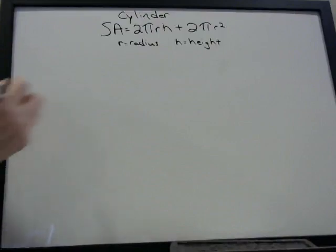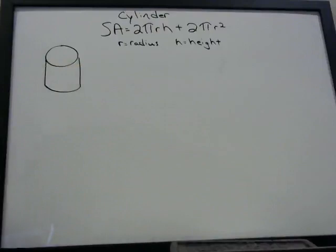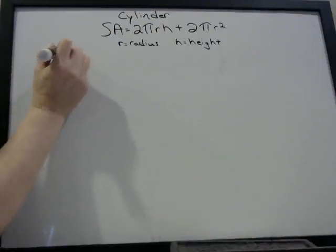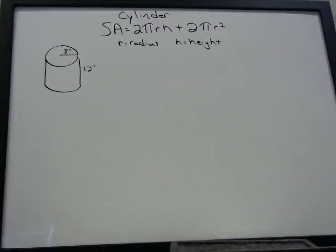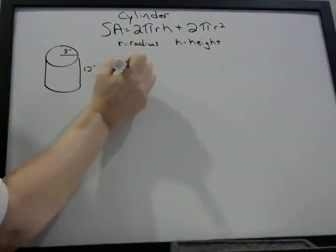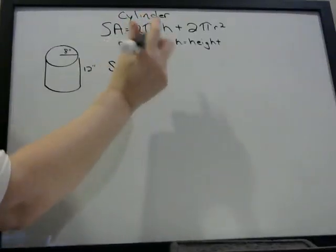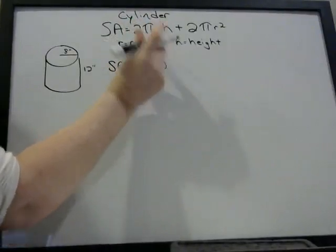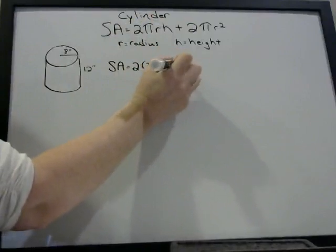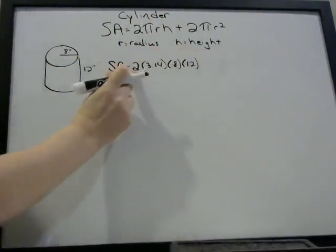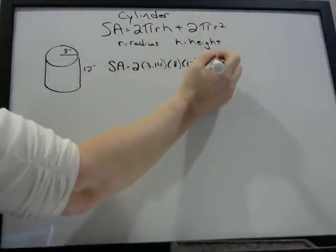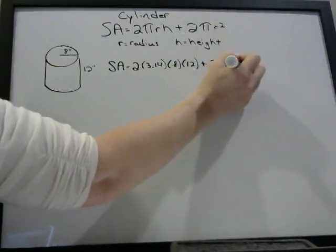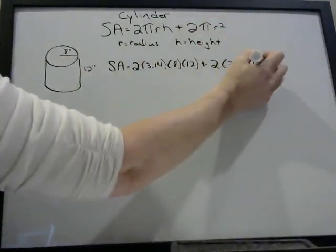Let's say we have a cylinder where the radius is 8 inches and the height is 12 inches. What is the surface area? We're just going to plug these numbers into the formula. Surface area equals 2 times 3.14 times the radius (8) times the height (12). Remember, when you write things in a row with parentheses, that means multiplication. Then plus 2 times 3.14 times radius squared — radius is 8, so that's 8 squared.